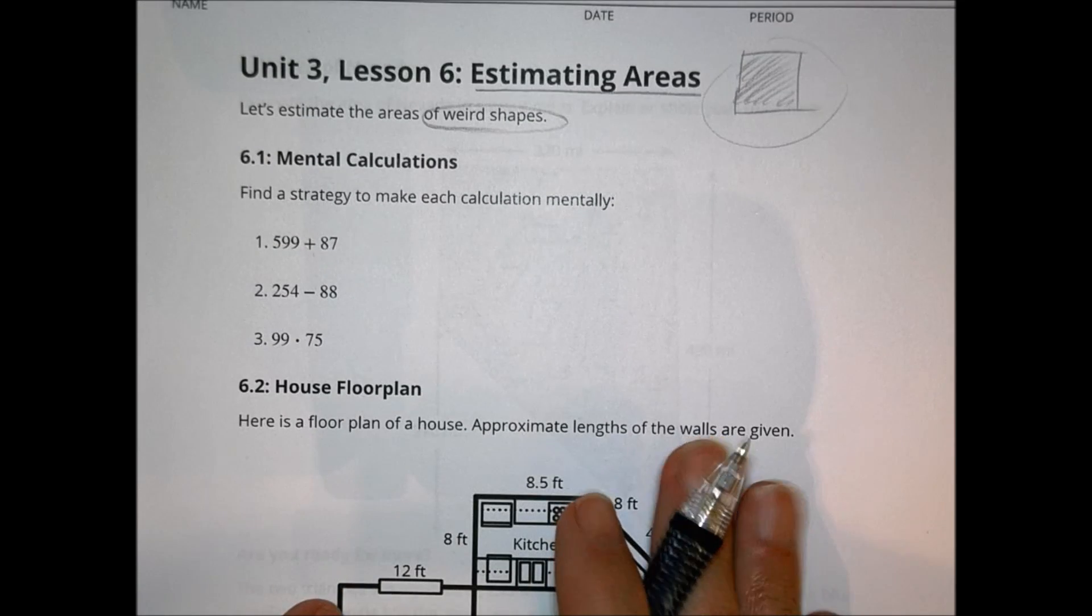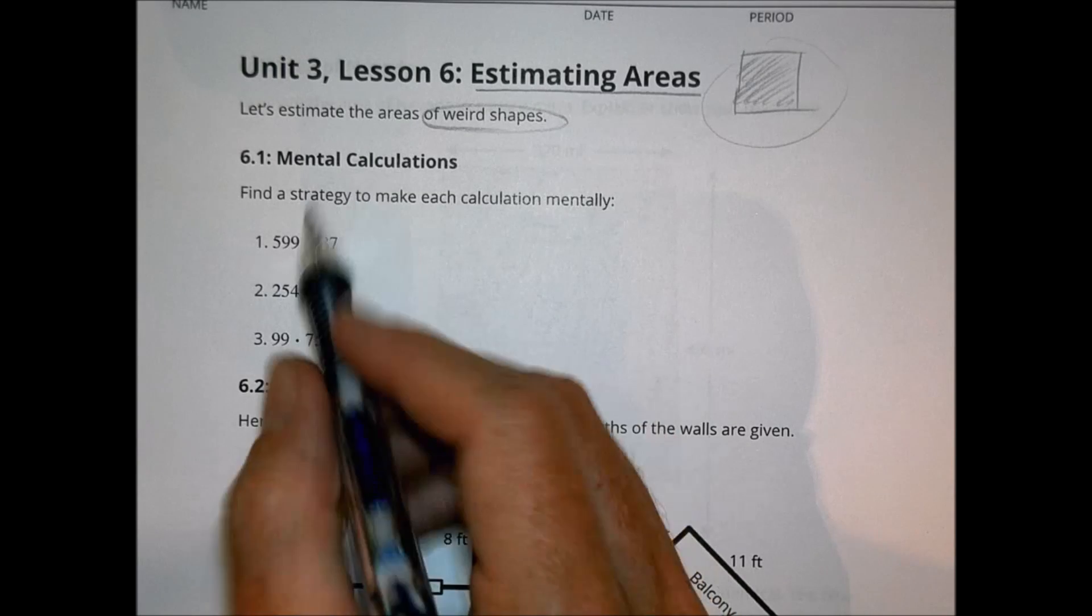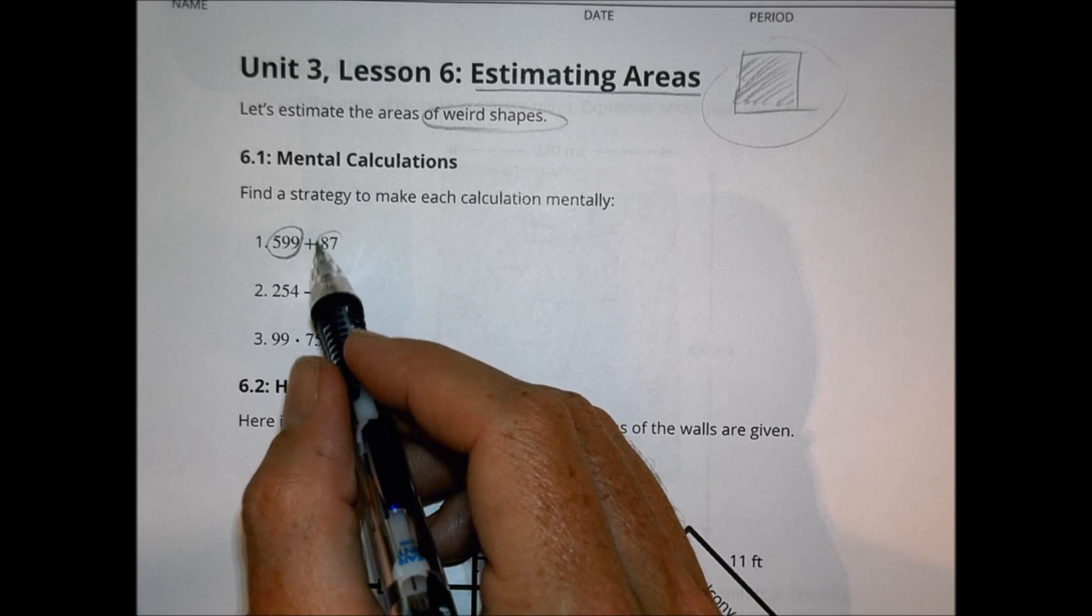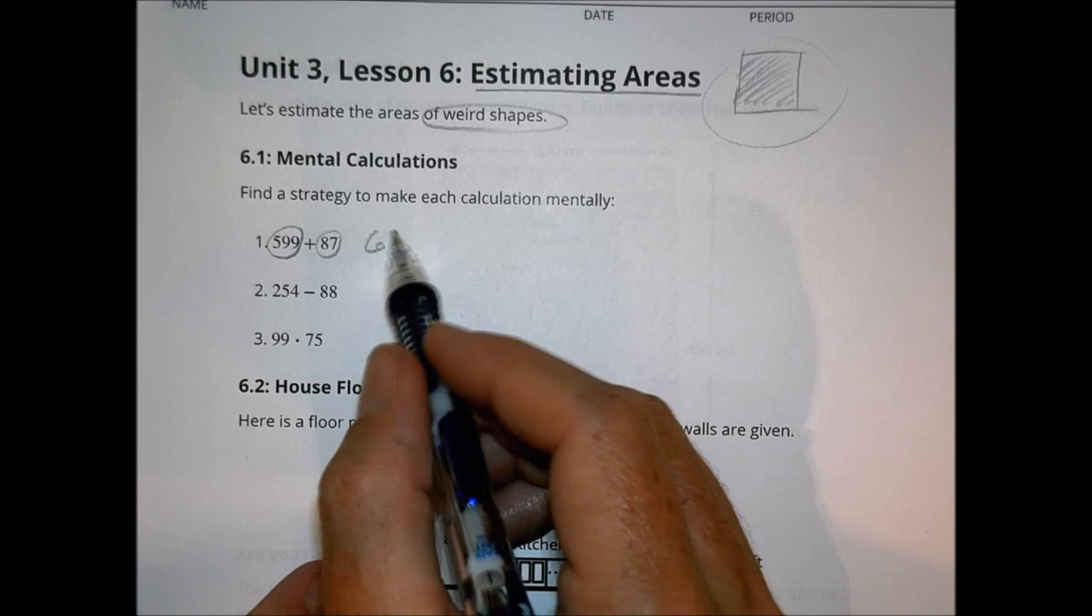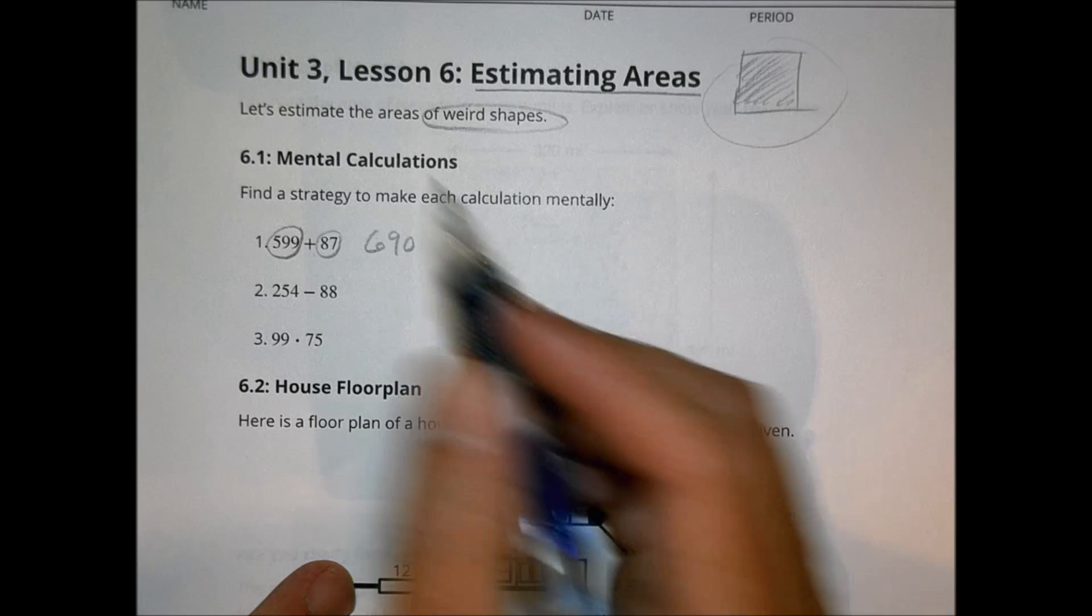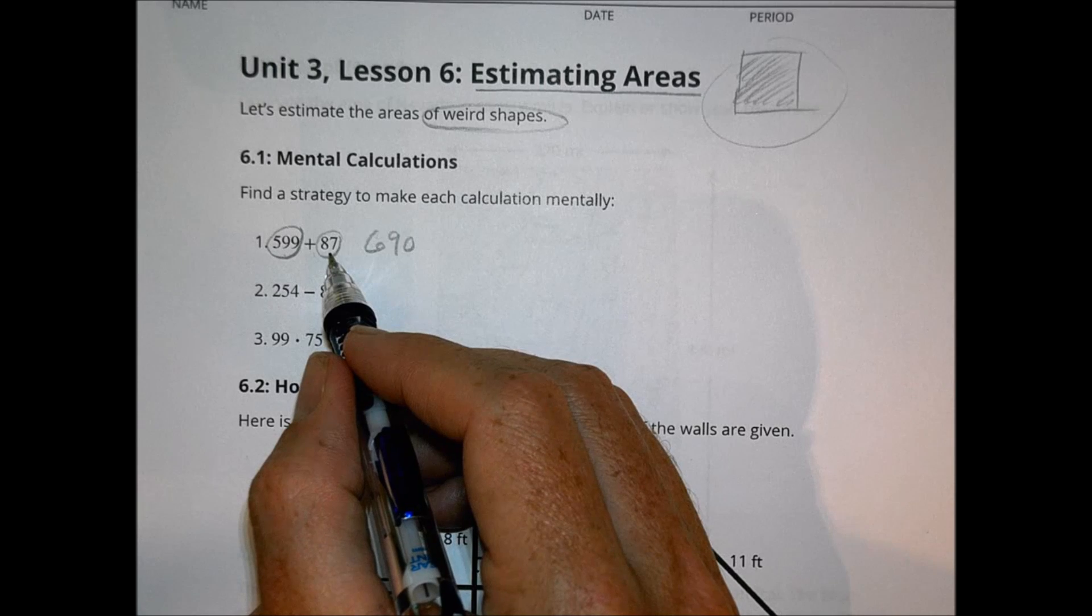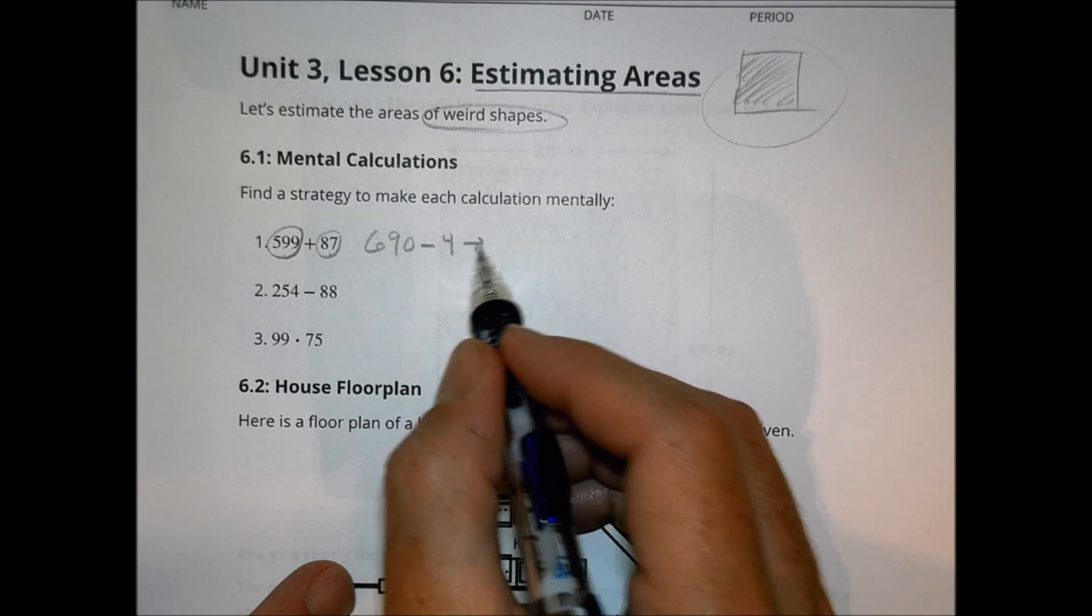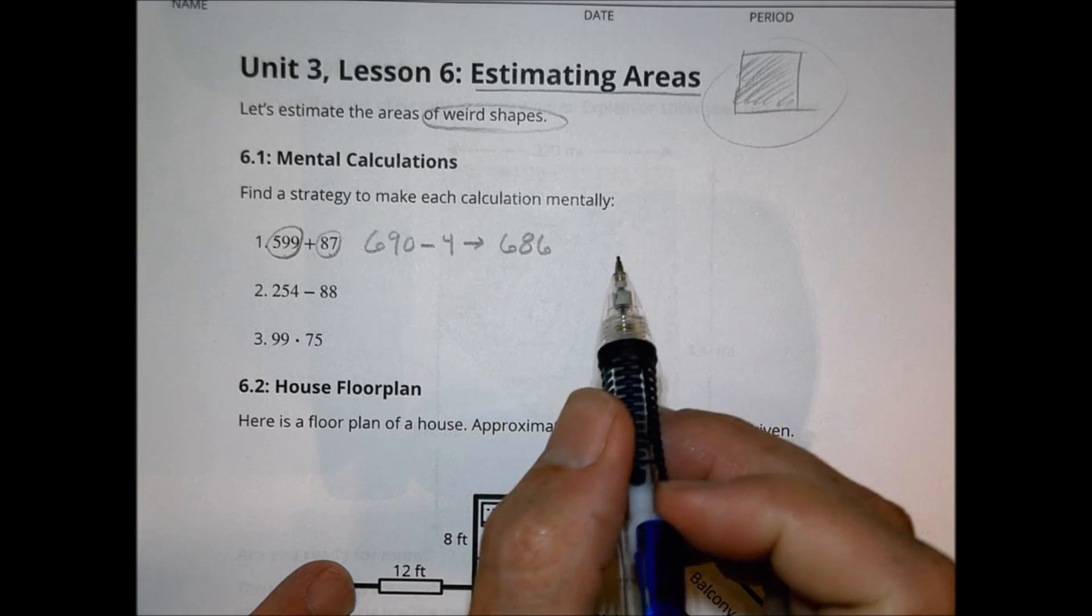We began with some mental calculations to figure out a strategy to make each calculation mentally. So perhaps you look at something like this and think, well, that's maybe about 600 and this one is about 90. If you combine it mentally, you might estimate 690, but we know if we want to get it accurate there, we don't want to leave it there because we added one there, we added three there to make that rounding, which means we added a total of four.